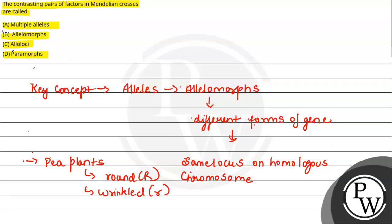Therefore, the correct option for this question is option B which is allelomorphs. Hope you understood it well, best of luck.